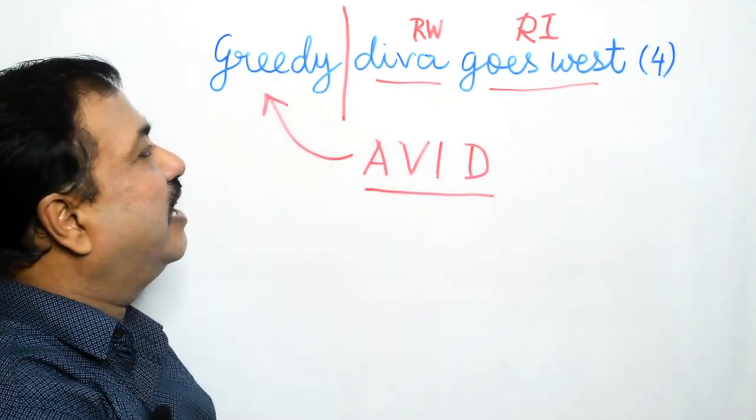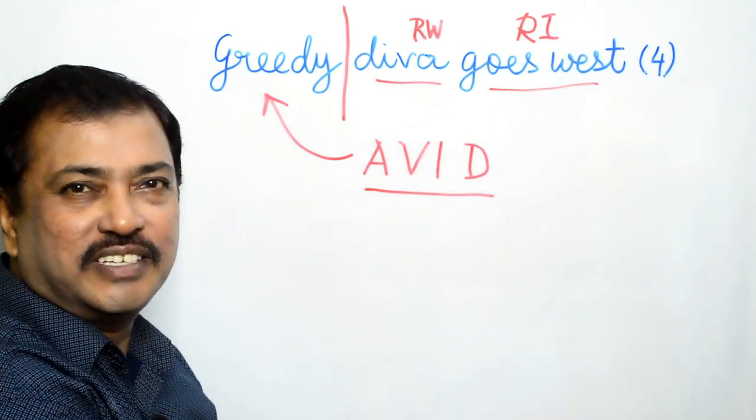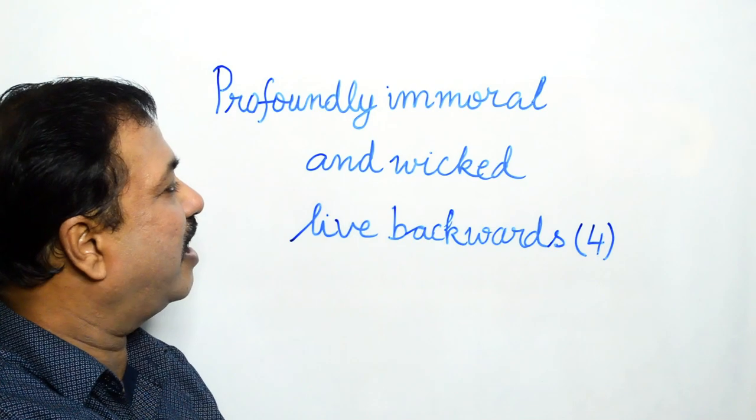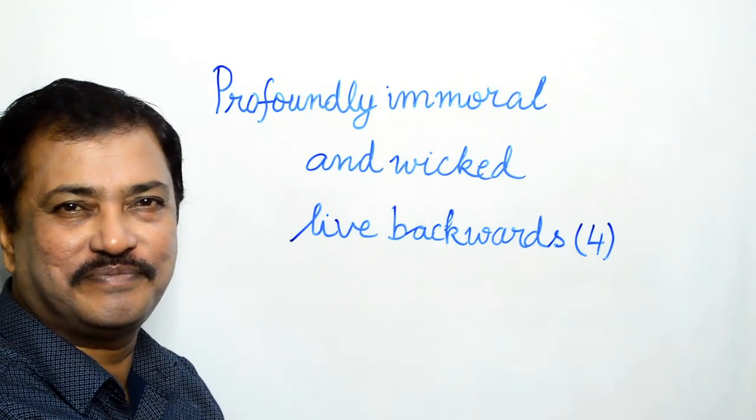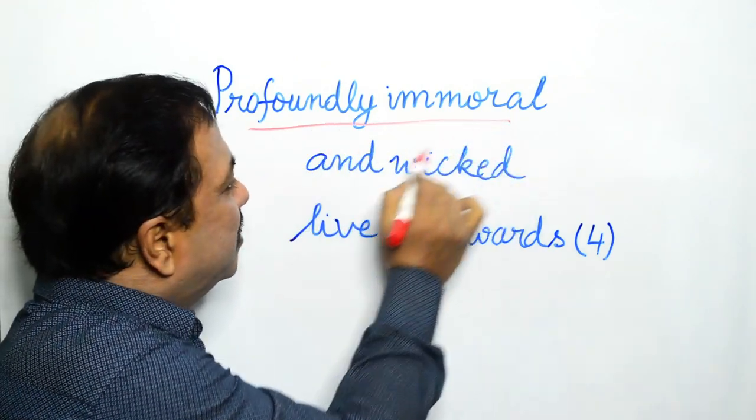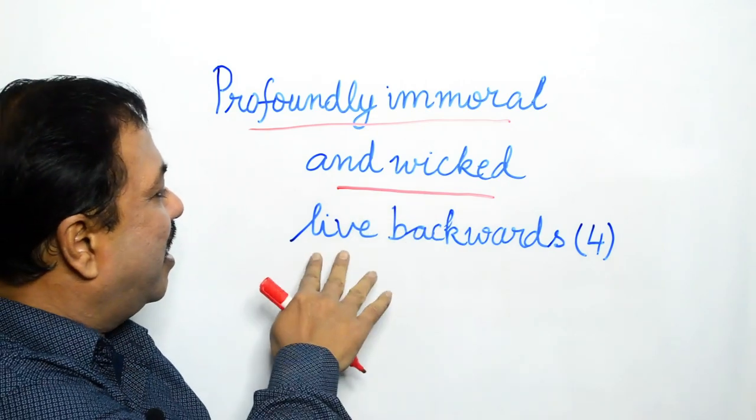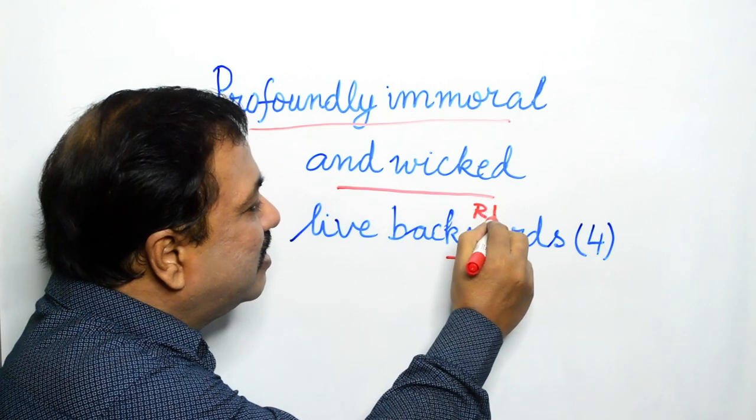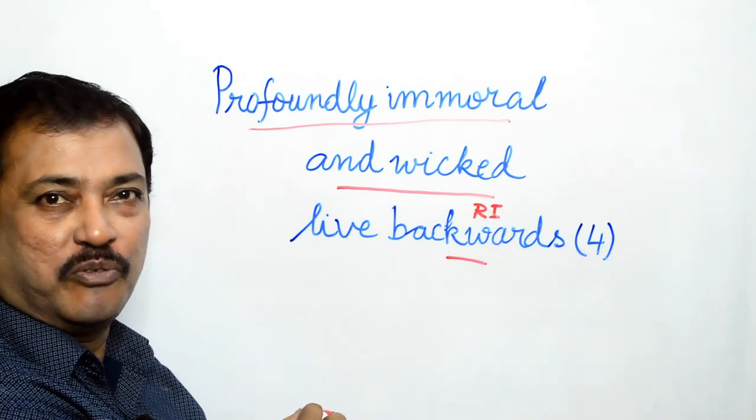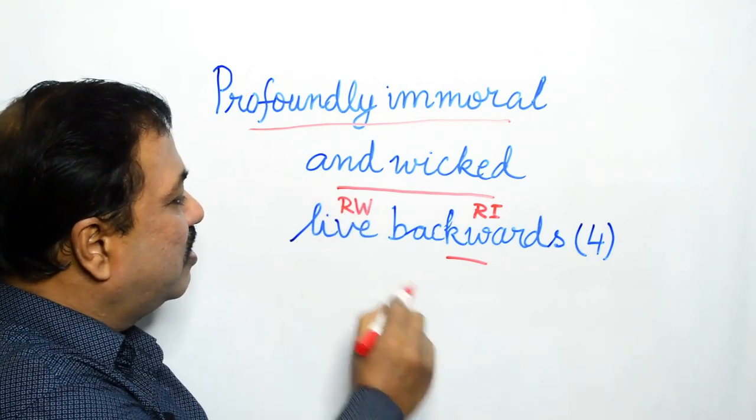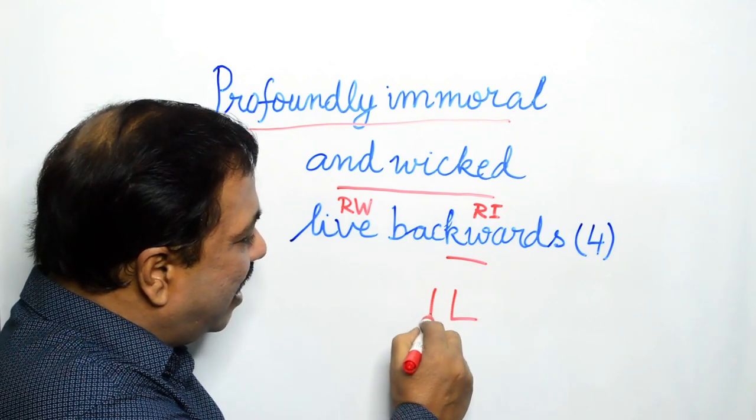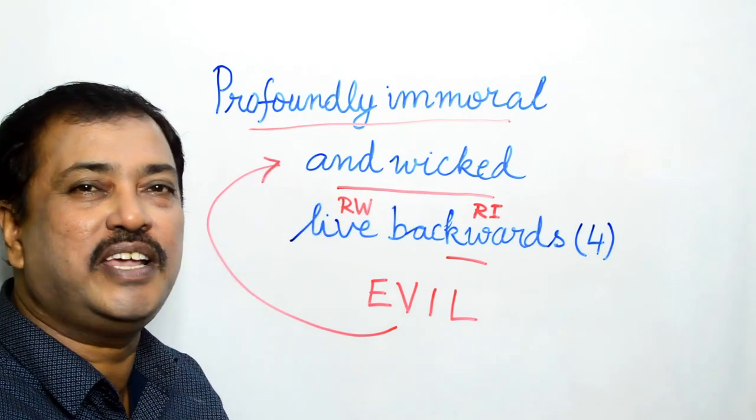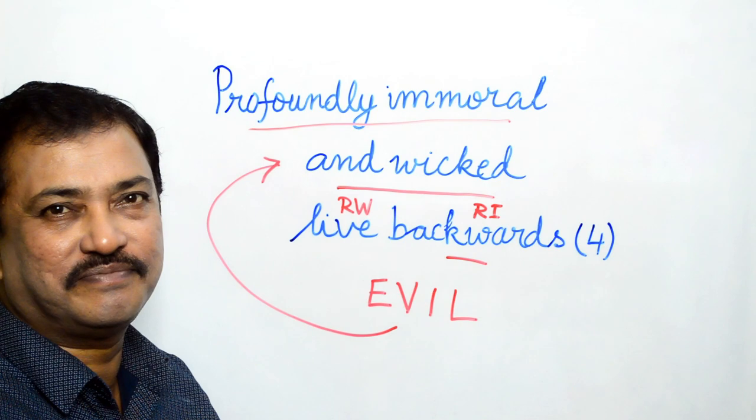And the clue could have also been written as greedy diva from the east or greedy diva returns. Now our second clue: Profoundly immoral and wicked live backwards. Profoundly immoral and wicked is our definition. Live backwards, so backwards is the reversal indicator and the reversible word is live. So we write backwards L-I-V-E, live, and we get evil, which is profoundly immoral and wicked. And that's our answer.